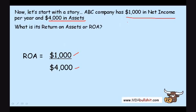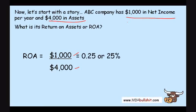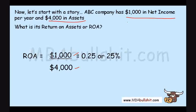which is the total assets of the company. If we divide these two numbers, we get a figure of 0.25 or 25%. So we can say that this company's ROA, or return on assets, is 25%. What does this mean?